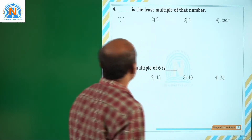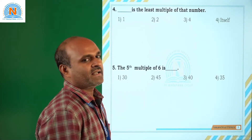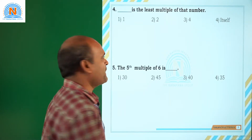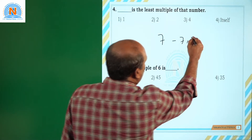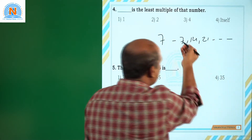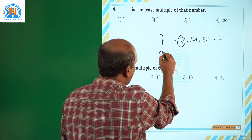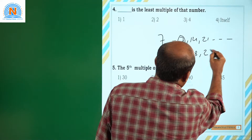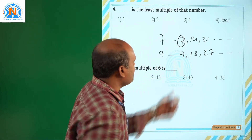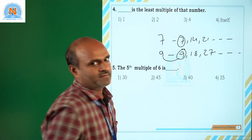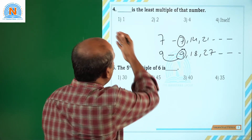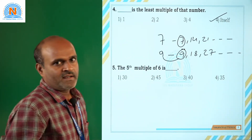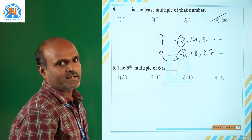Coming to the next question: dash is the least multiple of that number. The least multiple is the number itself. For example, the multiples of 7 are 7, 14, 21, and so on — the least one is 7, the number itself. Taking 9, its multiples are 9, 18, 27, and so on — the least one is 9, the number itself. So the least multiple of a number is the number itself.